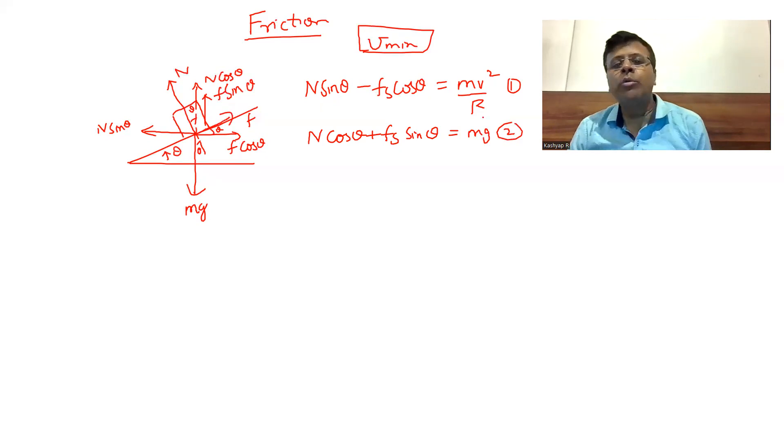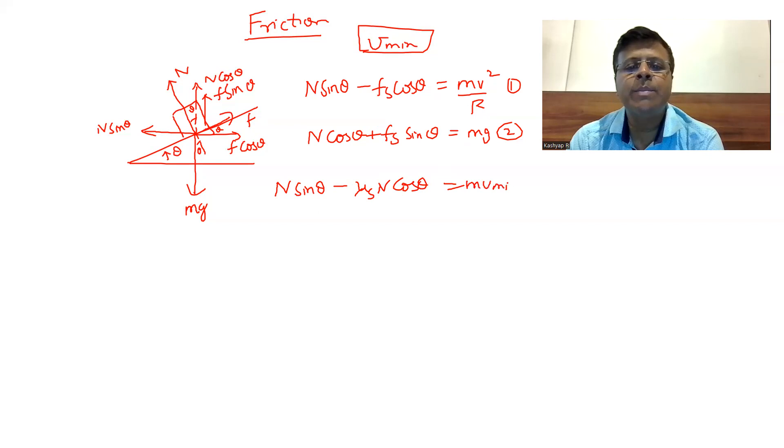Since I'm talking about the boundary condition, the moment I put Fs as its maximum value, then automatically V will become minimum. So then I'll write N sine theta minus mu S N cos theta, and this is V minimum squared divided by R. That's the first equation. And the same thing can be done: plus mu S N sine theta equal to M times g.